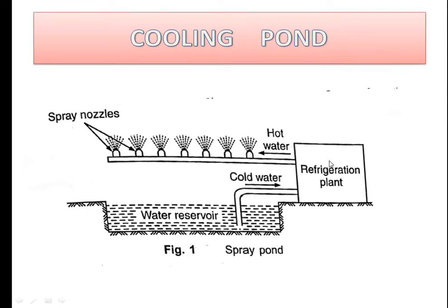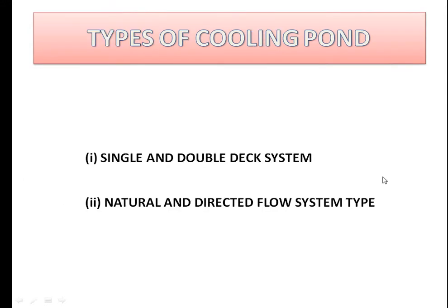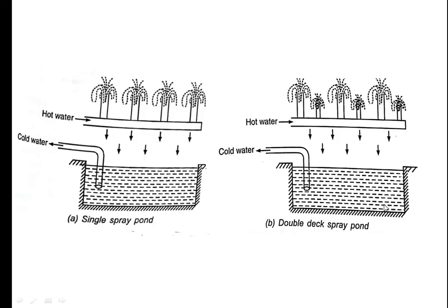It is a simple principle. The types of cooling ponds are the single and double deck system, and the natural and directed flow system. The first is the single spray pond.